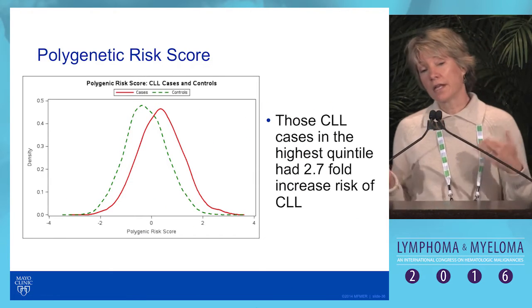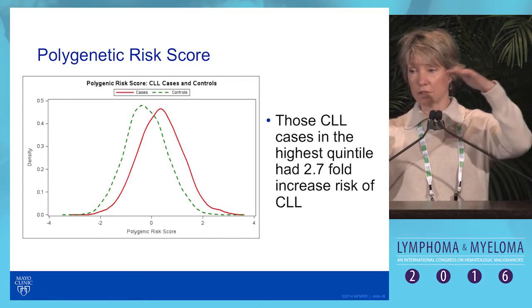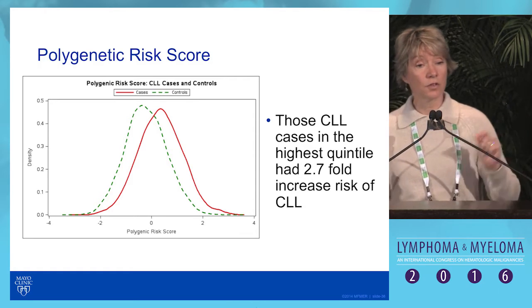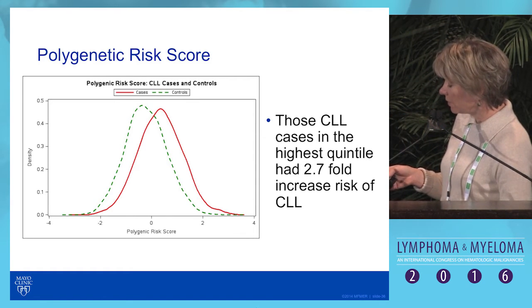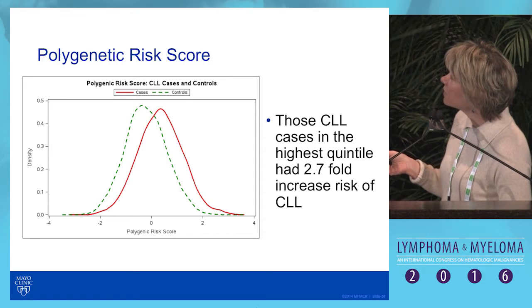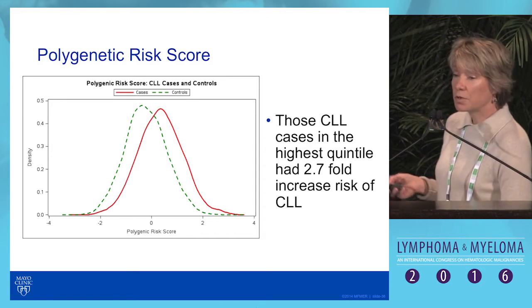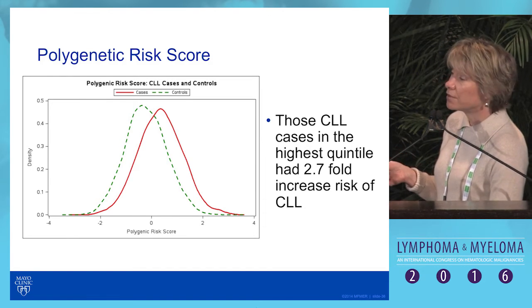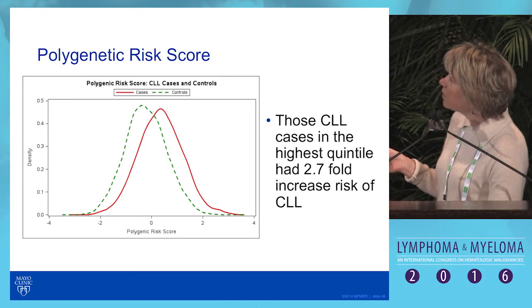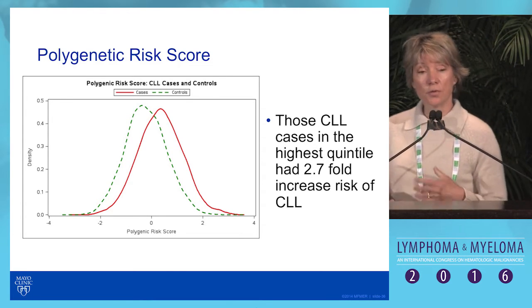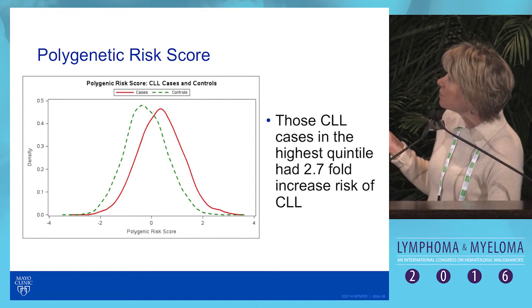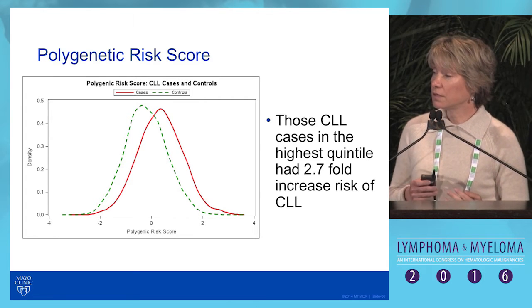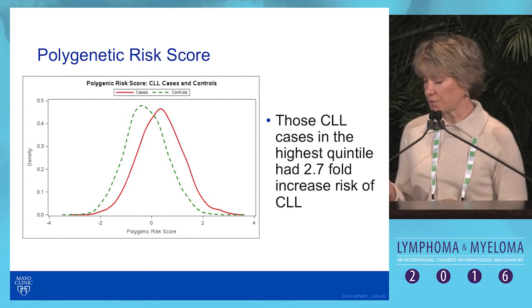Taking all these variants together, you can create a polygenic risk score by adding up an individual's number of risk variants across all 40+ variants. The distribution is shifted to the right for CLL cases compared to controls. Comparing the upper tail to those in the middle of the distribution, there's a 2.7-fold increased risk of CLL — making these genetic variants one of the stronger risk factors for CLL compared to non-genetic factors.